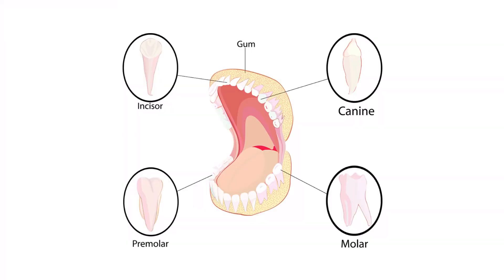To answer this question, let's take a look at the different types of teeth. The diagram here shows that there are four main types of teeth: the incisors, the canines, the premolars, and the molars.